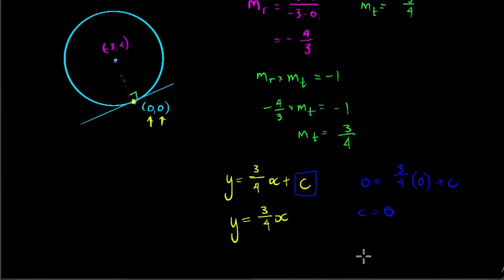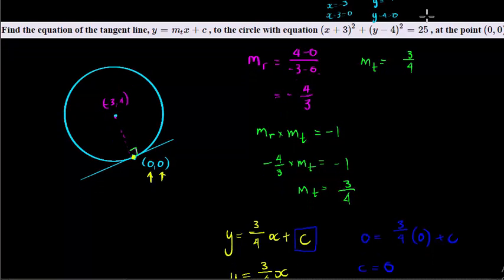of this simplifies. It goes to 0, so y equals gradient times x, and that is the equation of my tangent line to this given circle. Thank you very much for watching.